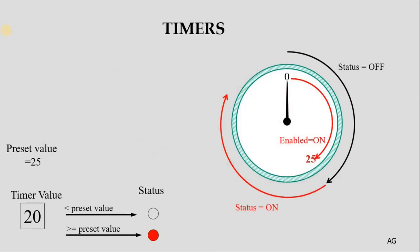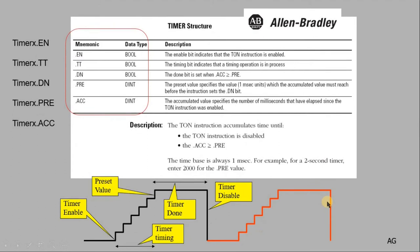Think of a timer as a stopwatch with a mark at 25 seconds. The stopwatch will never run until you press the button. When you press it, your timer starts — that means you've enabled your timer. Once you reach the 25-second mark (the preset value) you can do some actions. Before this preset value you have one status; after the 25 seconds you have a status change.